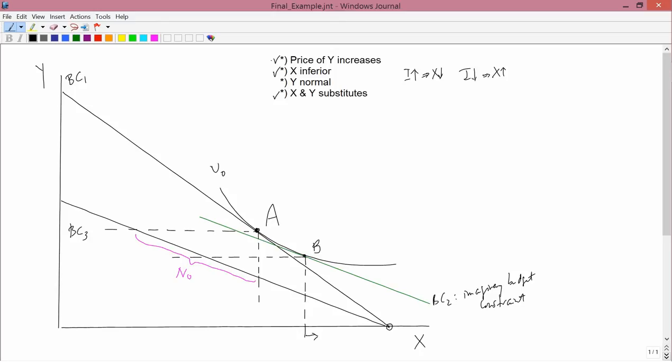That takes care of the second criterion. The third criterion is that y is normal. The definition of a normal good is that if income increases, then consumption of the good increases. But here, the motion from B to BC3 is like an income decrease. And for a normal good, if income decreases, then consumption of the good has to decrease. So we need y to decrease.